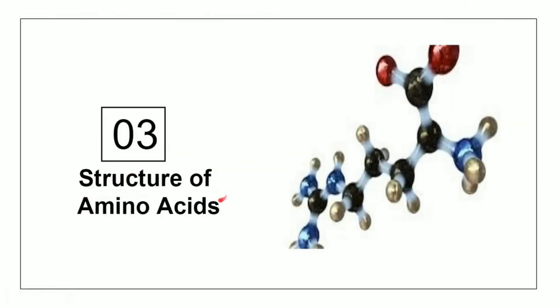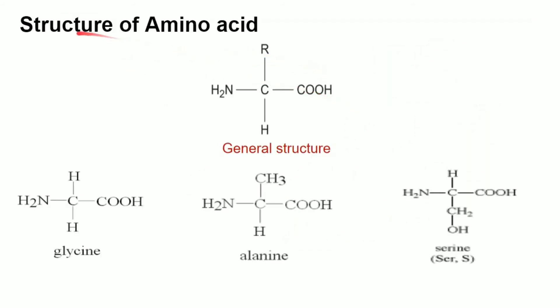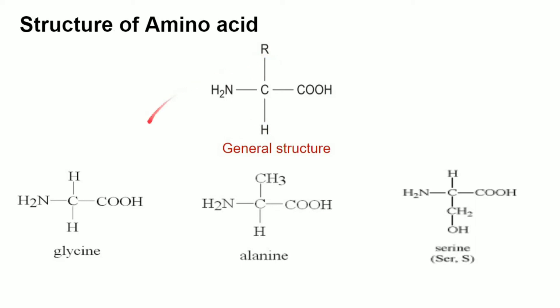Structure of amino acids — what is the general structure of amino acids? We have to use the simple structure. In the balance of the 20 amino acids, the whole structure is the same. The groups are: amino group, carboxyl group, hydrogen group, and R group. These groups are the same across all amino acids.